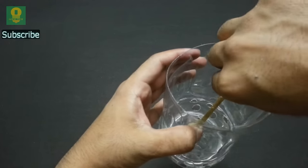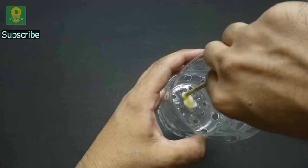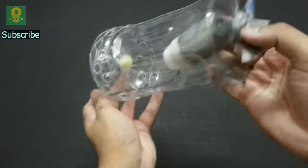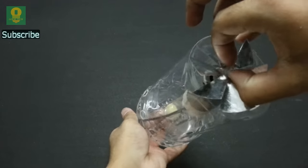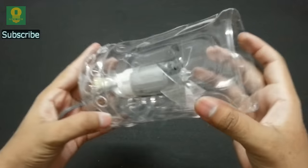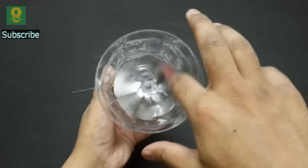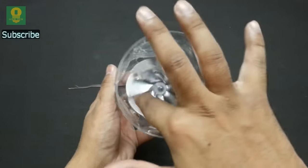Apply adhesive at the base of the bottle and fix the motor at the center of the base. Make sure that the propeller moves freely inside the bottle.